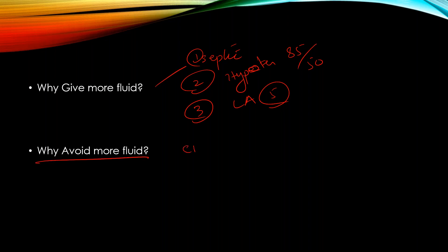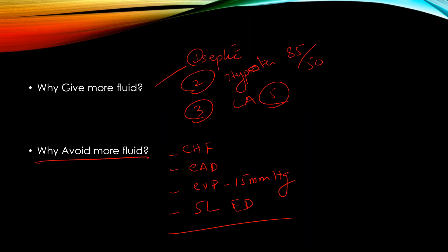Why should we NOT give more fluid? Because this patient has a history of CHF, history of coronary artery disease, CVP is 15 mmHg, and the patient already received 5 liters of fluid in the ED. This is our topic of discussion today: how to assess volume status and volume responsiveness in patients you see on the floor and in the ICU.